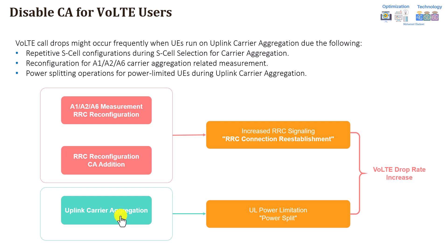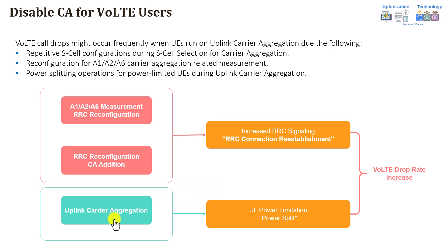So uplink carrier aggregation in general will limit the uplink transmitted coverage for the users. This can also negatively impact coverage. That's why it's generally recommended to disable carrier aggregation when using VoLTE.